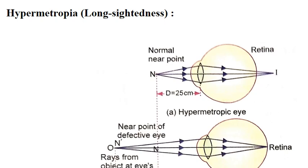Hello everyone. In this video let us see the eye defect called hypermetropia, which is also known as long-sightedness. The eye which can see only distant objects clearly is said to suffer from hypermetropia.